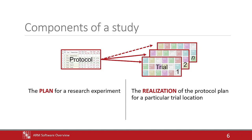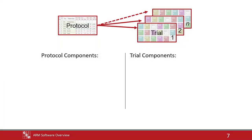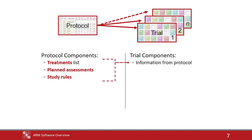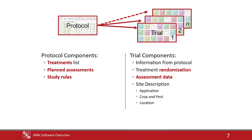Multiple trials can be created from a single protocol when performing a series of trials. A protocol consists of the treatments to test, planned assessments, and study rules to identify vital information to record. A trial consists of the key information from the protocol, the randomization of treatments, data from assessments, and a description of all site details. The site description includes applications, crops and pests, and the location description.